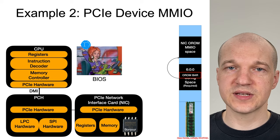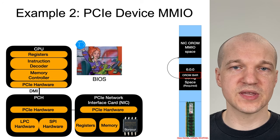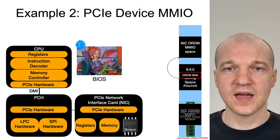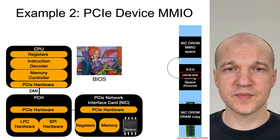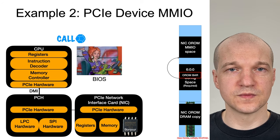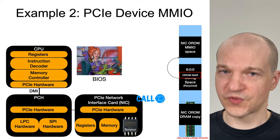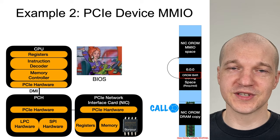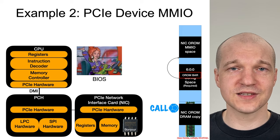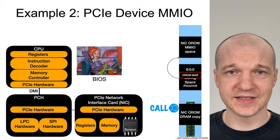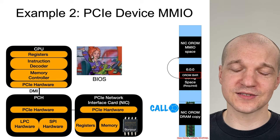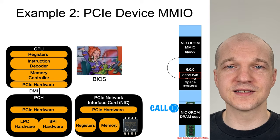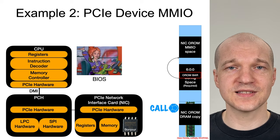What typically happens is the BIOS copies that information down into RAM via a memcopy effectively. Once there's a copy in RAM, the BIOS calls into that particular RAM copy of the Option ROM to execute the arbitrary code — code that potentially an attacker has installed into this external peripheral device — in the context of the BIOS, allowing it to infect anything else later in the system. That's not a good situation.